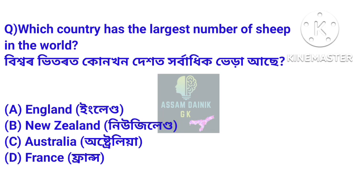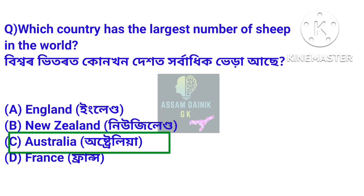Which country has the largest number of sheep in the world? Answer: Australia. Australia has the highest number of sheep in the world.